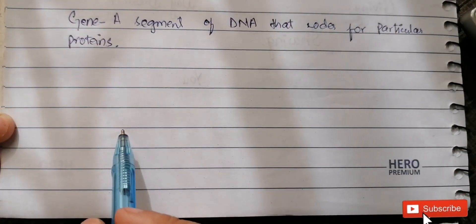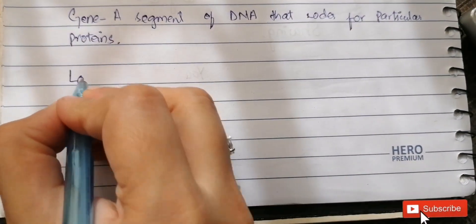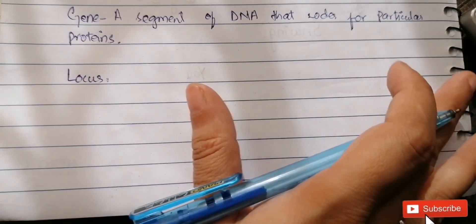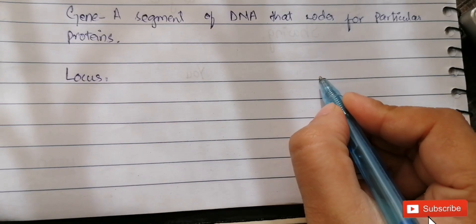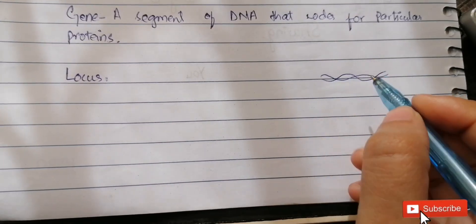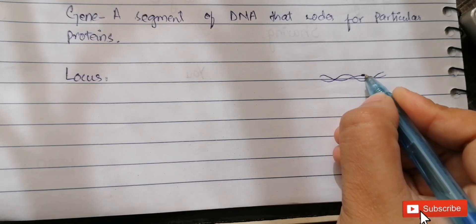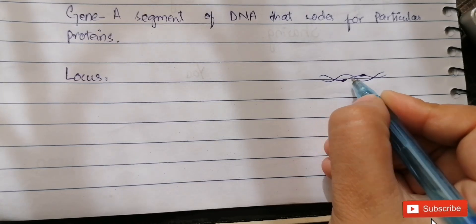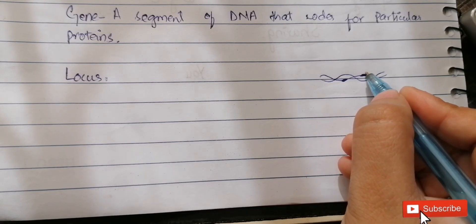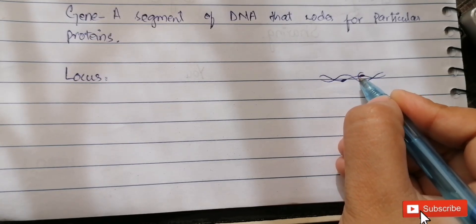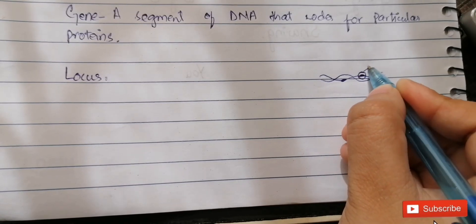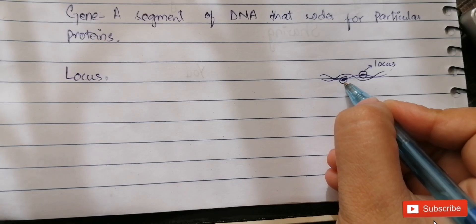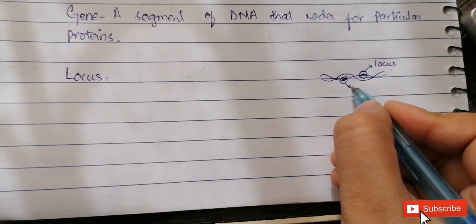The last definition we will discuss is locus. A locus is a particular location on a chromosome where a specific gene is found. For example, consider a chromosome structure — there is a specific point where the gene for hair color is present, another point where the gene for skin color is present, and another where the gene for eye color is present. The particular position where a gene is located on a chromosome is known as its locus.